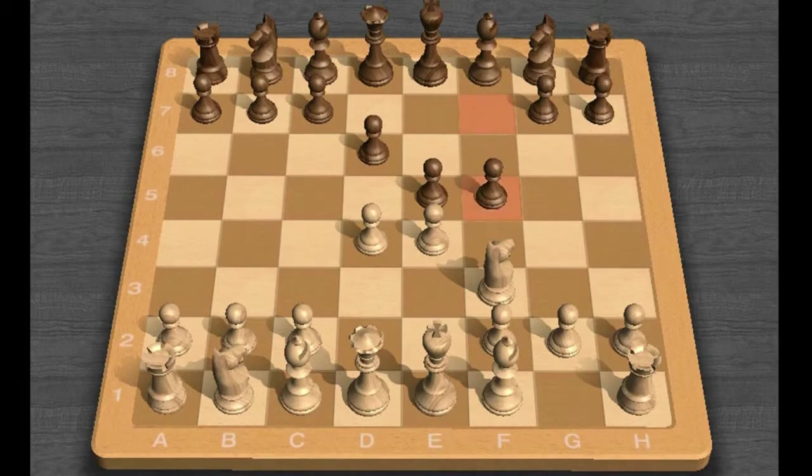Paul Morphy was not above playing risky, if not downright bad, openings at times, and this dubious advance should lead to trouble against correct play. The problem with F5 is that it neglects development and weakens the king's side.